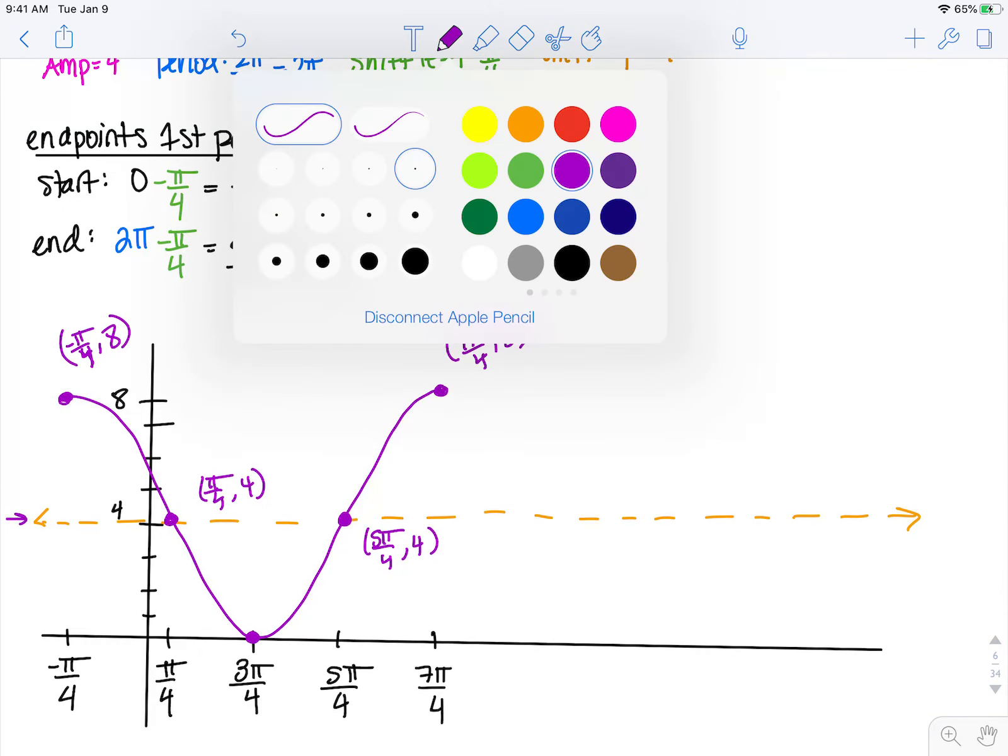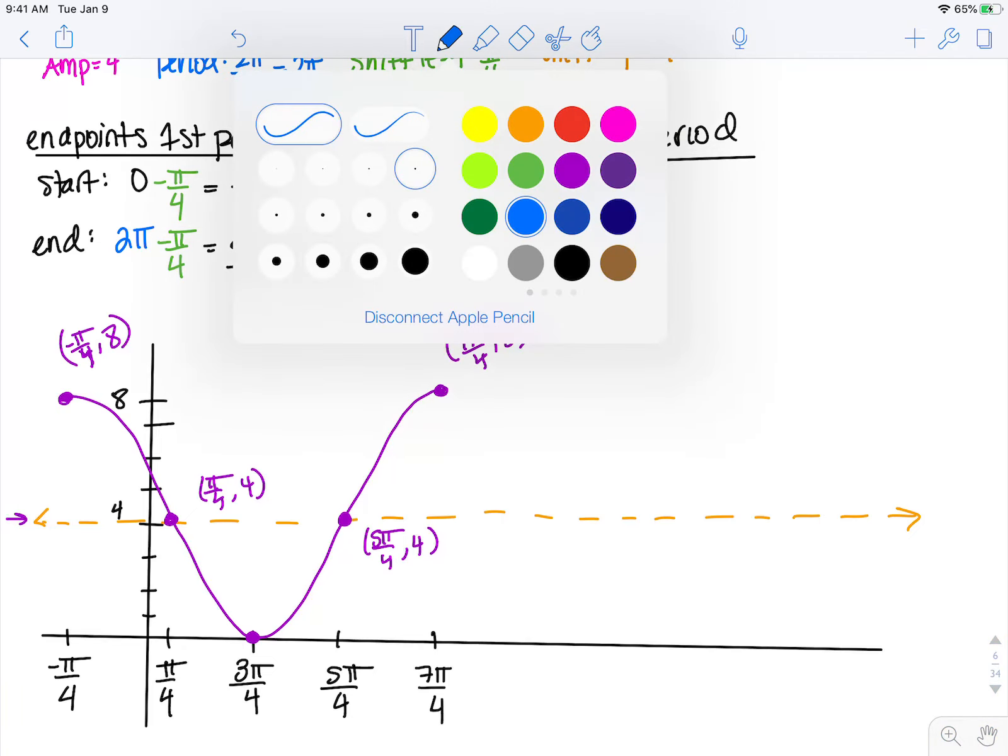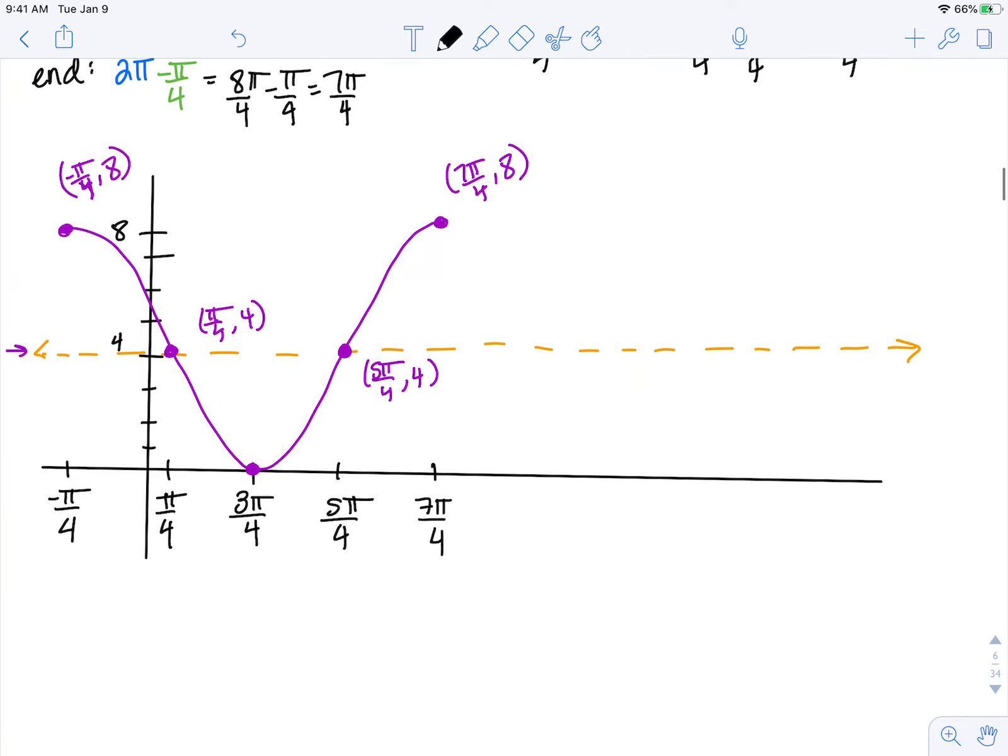Now that I have my first period, I am going to find the end of my second period. So the first period ends at 7 pi over 4, and I'm going to add my period of 2 pi to see where I should end. So that is 7 pi over 4 plus 8 pi over 4, which is 15 pi over 4. So now I'm going to add another period here. It's going to end at 15 pi over 4.